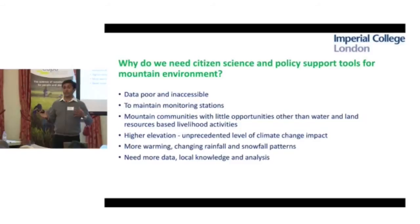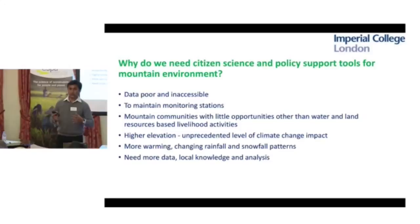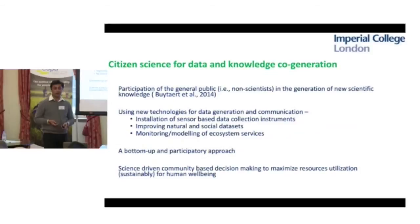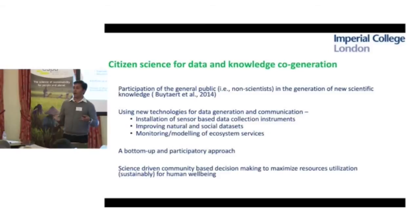We have to work more closely with local communities, as rainfall patterns and snowfall patterns are all changing. To understand how these hydro-meteorological changes are occurring, we must work with local communities. Citizen science is basically about working with the general public — non-scientists — who can help us collect data and co-generate various knowledge and data systems for improving our understanding of how hydro-meteorological systems work.